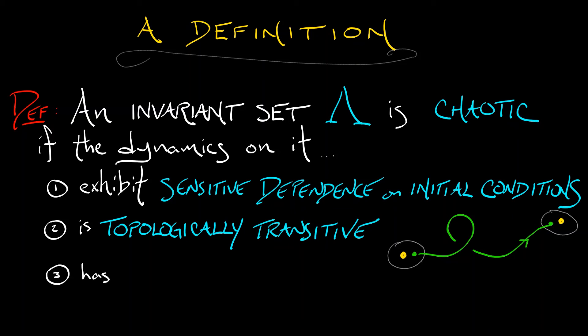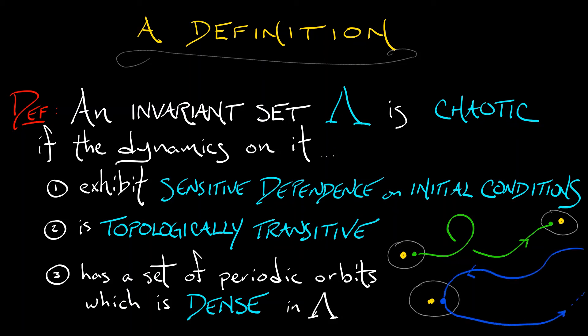The third and final condition for a chaotic invariant set is that it is full of periodic orbits. What I mean specifically is that the set of periodic orbits within lambda is dense within lambda. If you take the closure of the periodic orbit set, you get all of lambda. What that means in practice is given any point in your invariant set and any small neighborhood about that point, there's a periodic orbit that passes through it.